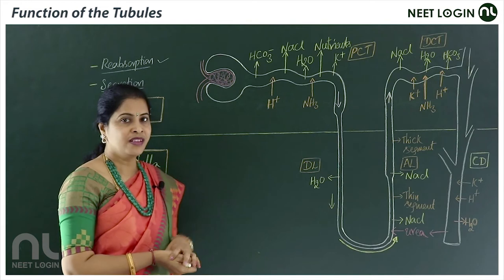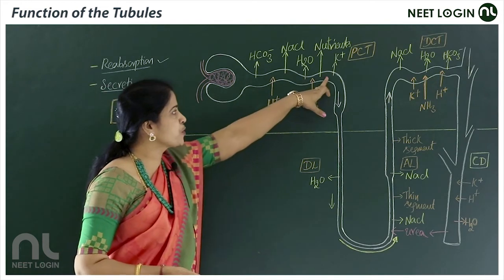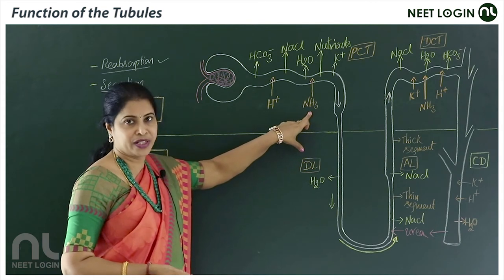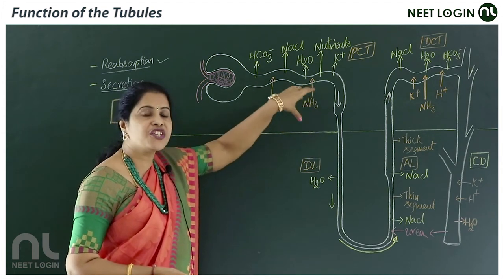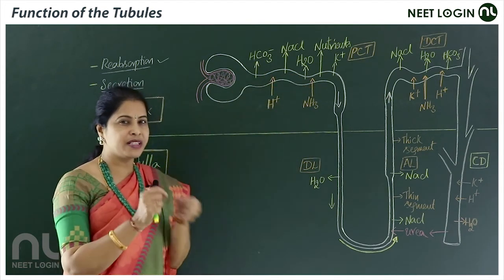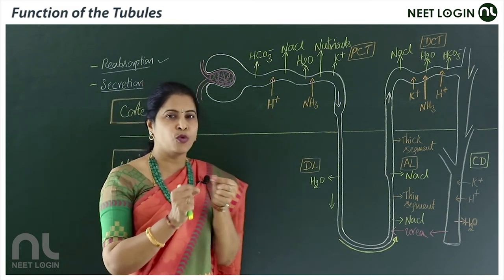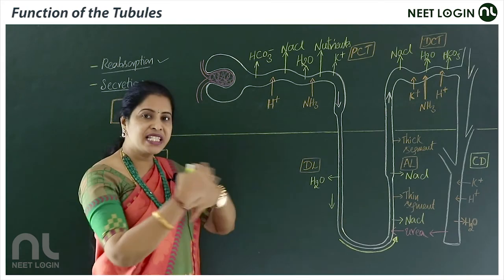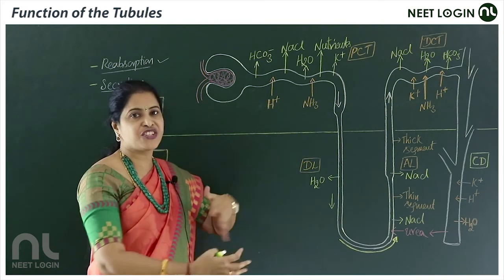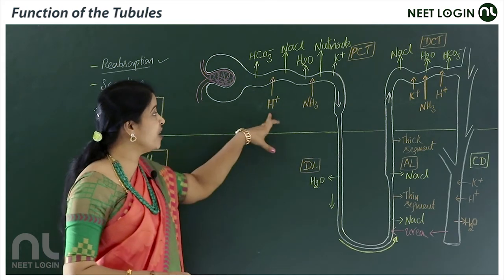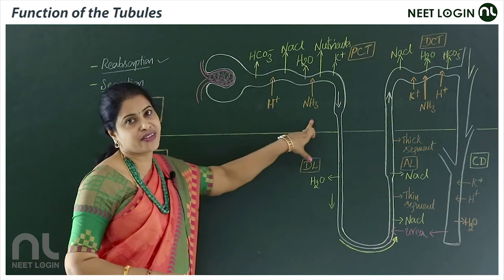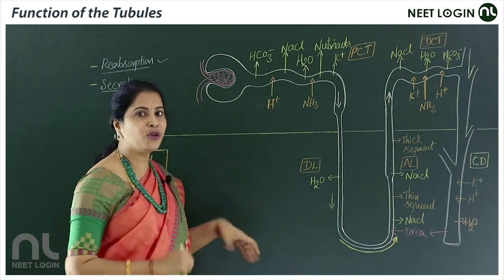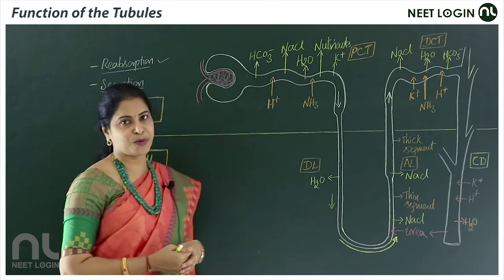In the PCT, potassium is majorly reabsorbed, while H⁺ ions and ammonia are secreted into the tubule. So the PCT is important for maintaining pH and ionic balance through reabsorption of NaCl, bicarbonates, and secretion of NH₃ and H⁺ ions.